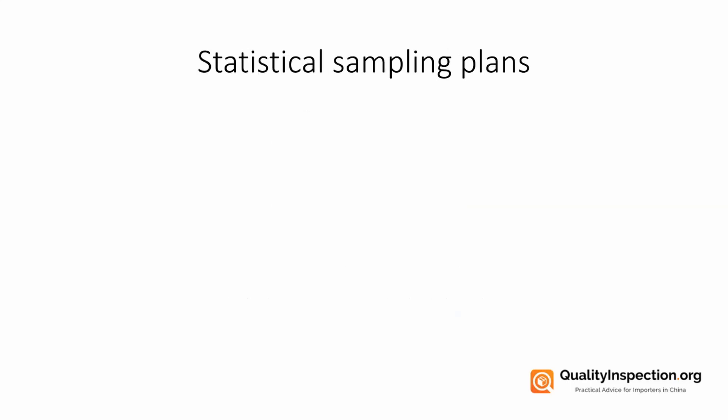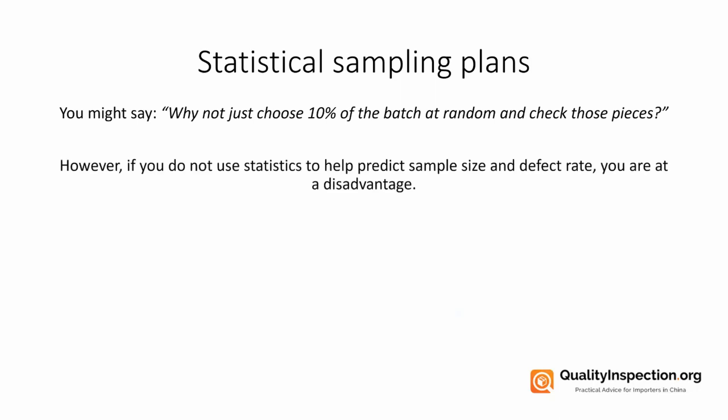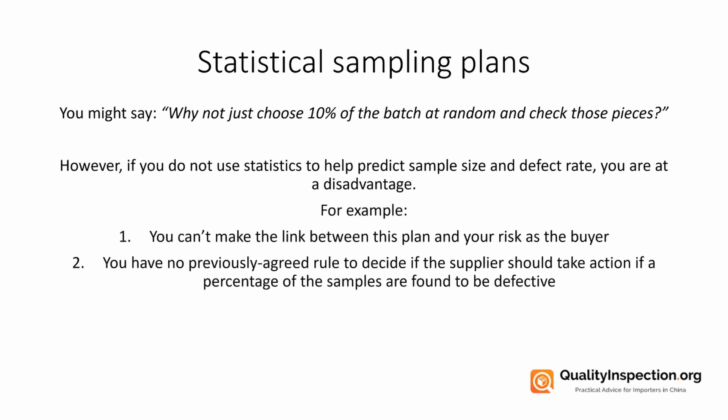Let's talk about statistical sampling plans. You might say, why not just use 10% of the batch at random and check those pieces? Actually, if you don't use statistics to help predict sample size and defect rate, you're leaving yourself at a disadvantage. For example, you won't be able to make the link between your plan and your risk as the buyer, and you'll have no previously agreed rule to decide if your supplier should take action if a percentage of the samples are found to be defective.